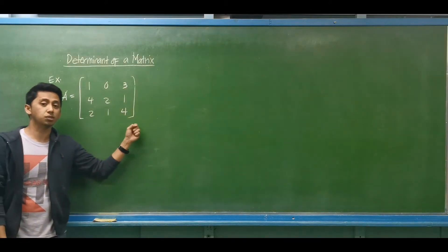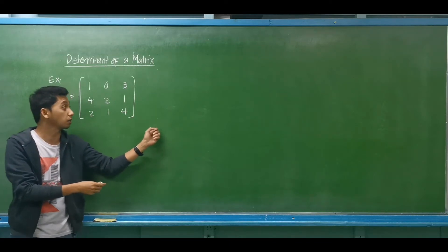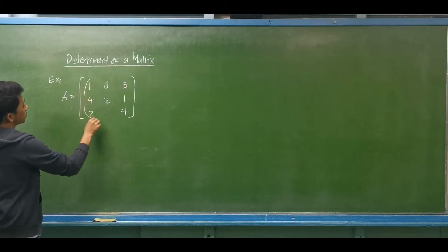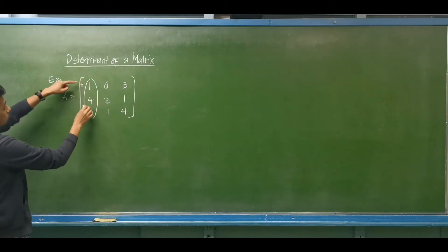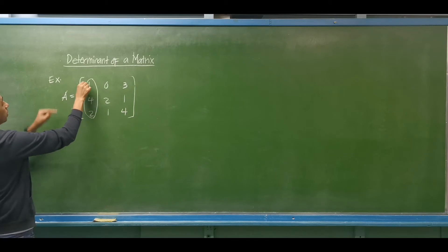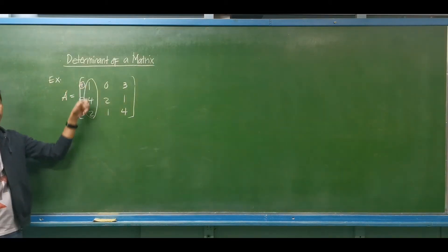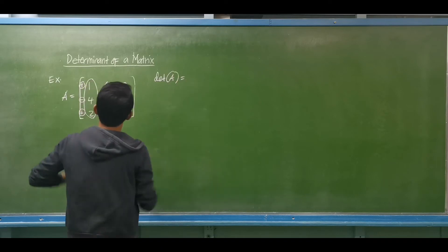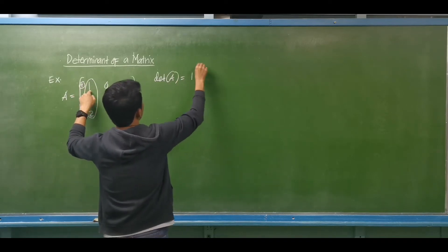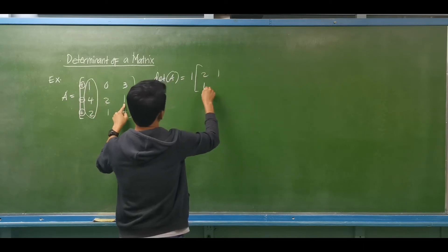Now, using the same matrix — what if we use a column instead of a row? I will be using the first column. Don't forget the alternating signs: positive, negative, then positive. Using the first column: the first element is 1. The minor of 1 gives us 2, 1, 1, 4.